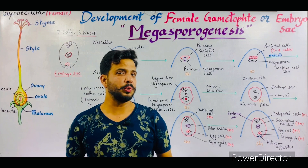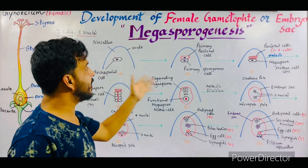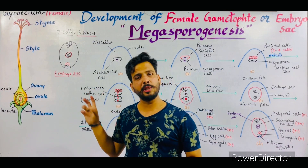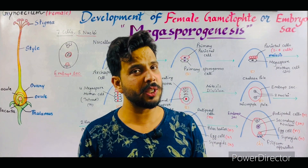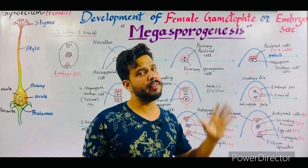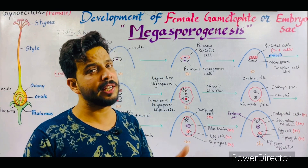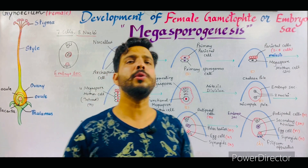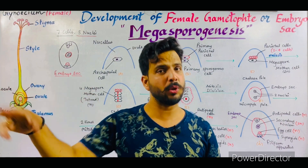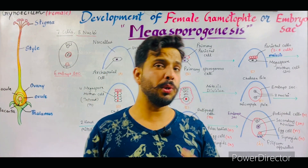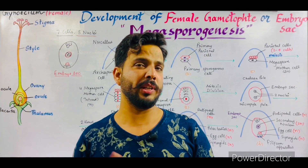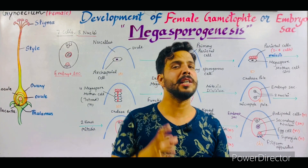Our diagram is ready. Now I am going to explain the topic of megasporogenesis. It is very important to know that the female gametophyte is also known as megaspore. So the process of formation of megaspore is termed as megasporogenesis. You can say it is the development of female gametophyte, or the development of embryo sac. Male gamete is known as microspore and formation of microspore is termed as microsporogenesis, while megaspore refers to the female gamete and its formation is megasporogenesis.